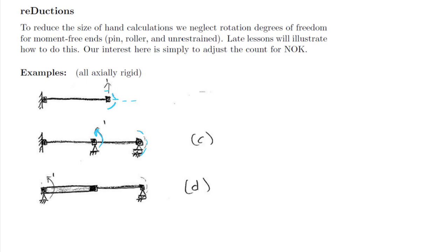The last example is also one that we've looked at before. Now, we can't reduce this degree of freedom, because that is the independent degree of freedom on the rigid body that relates to these degrees of freedom over here. But the right-hand node is an ordinary degree of freedom, so we can reduce that out. We've reduced this problem from an NOK of 2 to an NOK of 1.